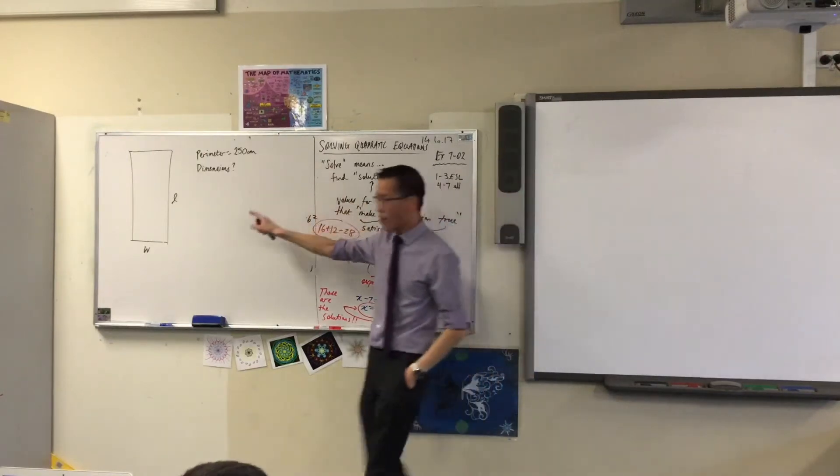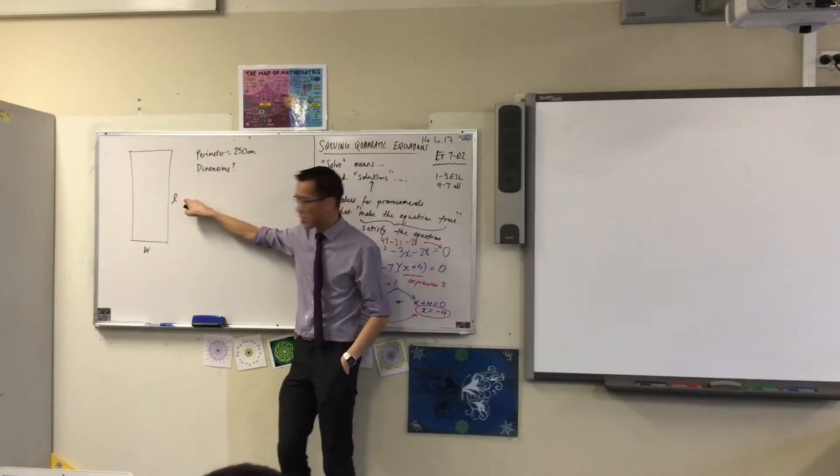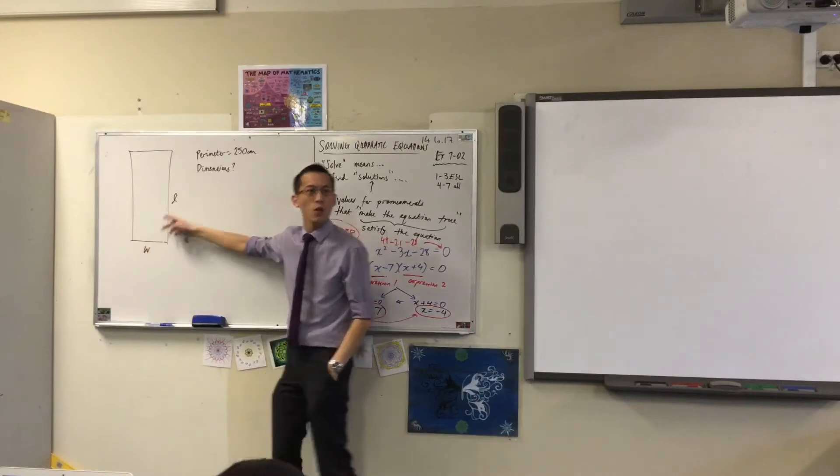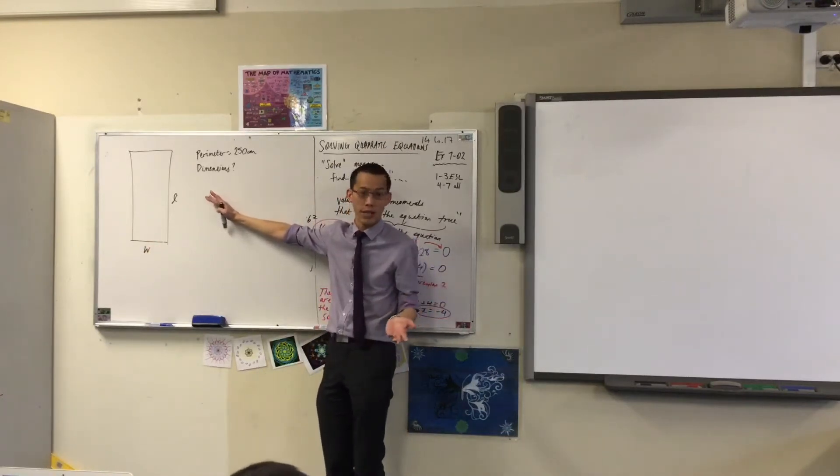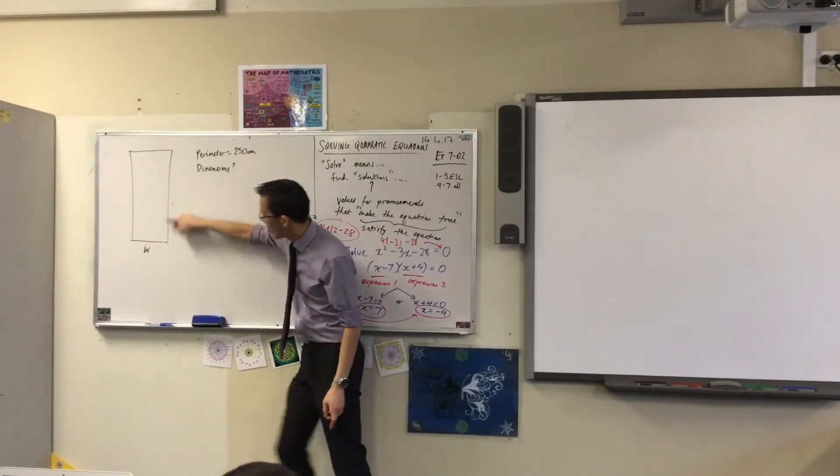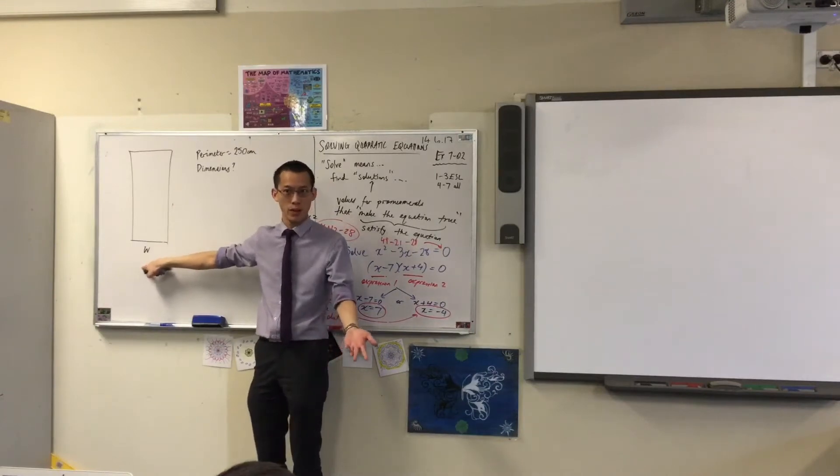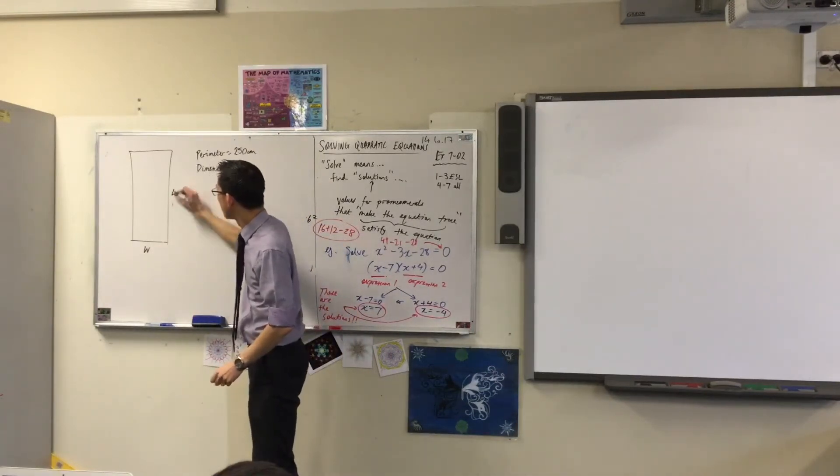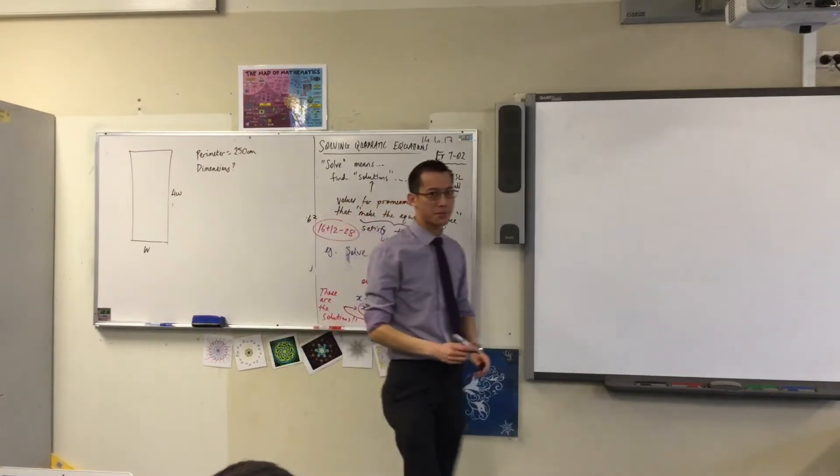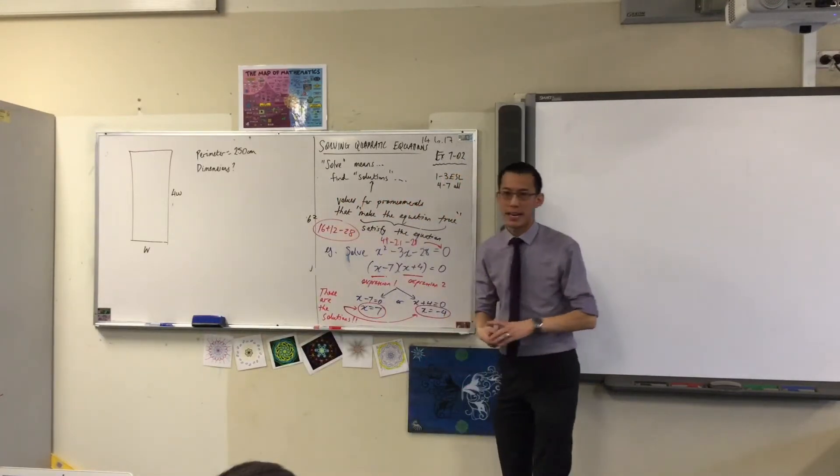So, since I know that the length is four times the width, instead of calling this a whole new letter, L for length, being that it's four times the width, I'm just going to call it 4W. And does that make sense?